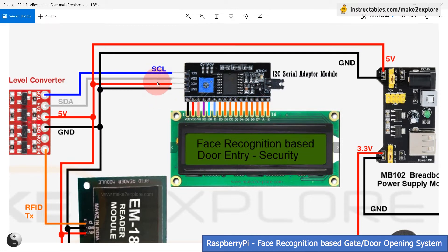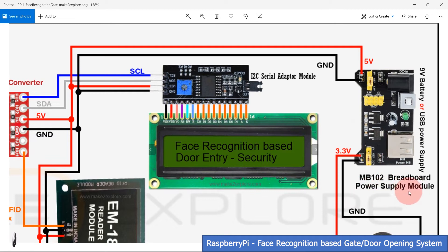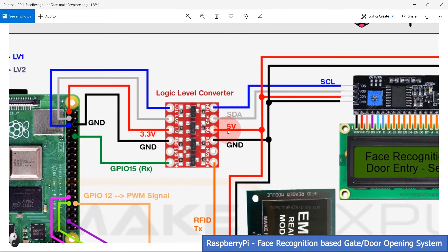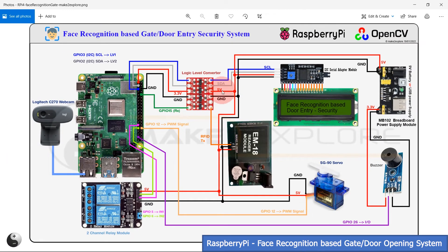The LCD is powered with 5V from this MB102 breadboard power converter module. This module converts a 9V battery or USB power supply to two power rails: 5V and 3.3V. This is a logic level converter module. It is required since Raspberry Pi pins work with 3.3V logic level, and this I2C module and RFID reader module work with 5V logic level. So we cannot connect 5V directly to Raspberry Pi's input pins. Hence, to avoid any pin damage, it is recommended to use this bi-directional level shifter device, which takes care of logic levels.